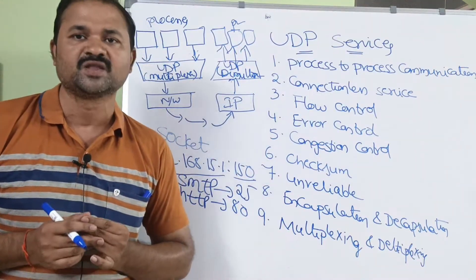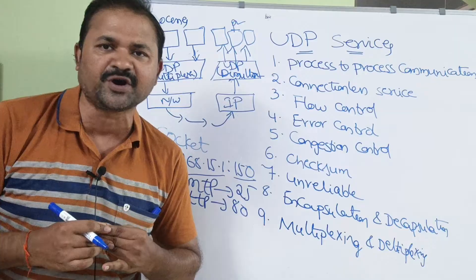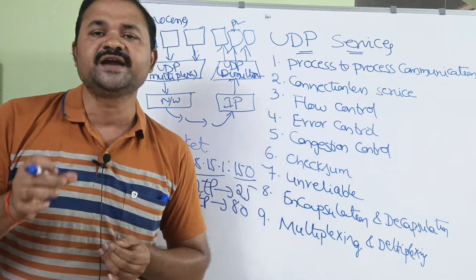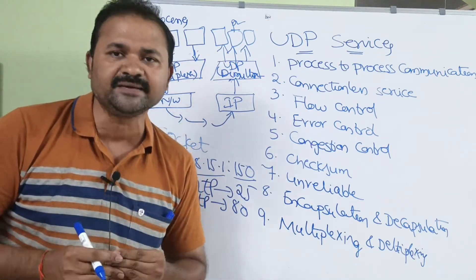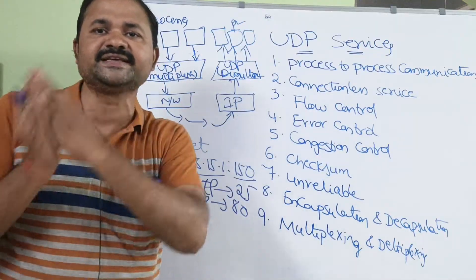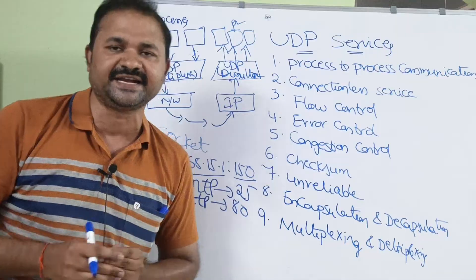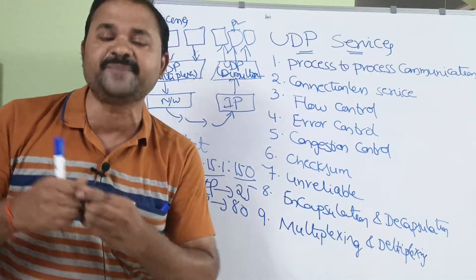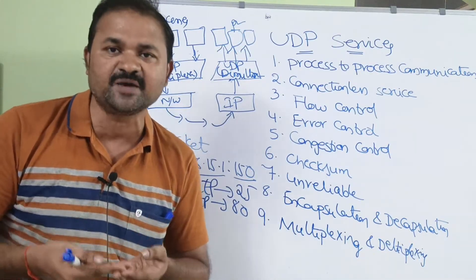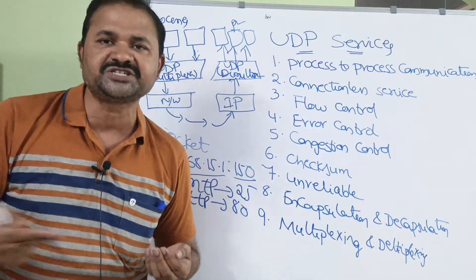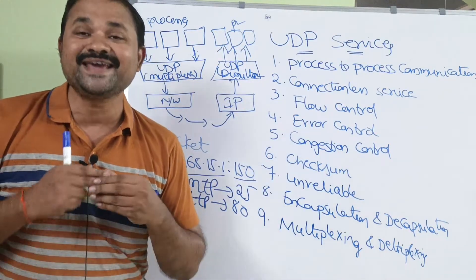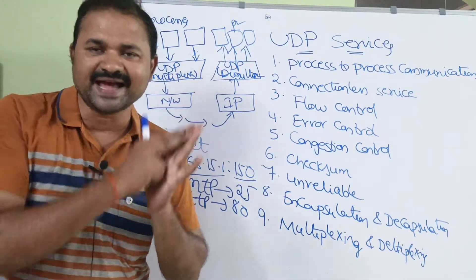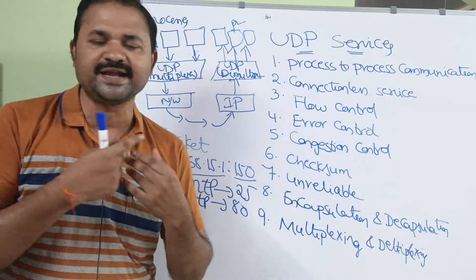The next one is connectionless service. UDP is a connectionless protocol. There is no need for connection establishment and connection termination. The sender and the receiver can communicate with each other by directly sending the data. Whereas if you take TCP, the connection management involves three phases: connection establishment, data transfer, and connection termination. But in UDP, there is no need for connection establishment and connection termination — the source and destination host can transfer data directly.